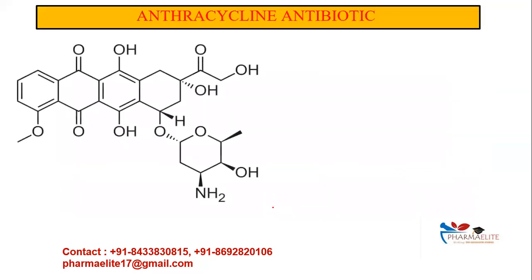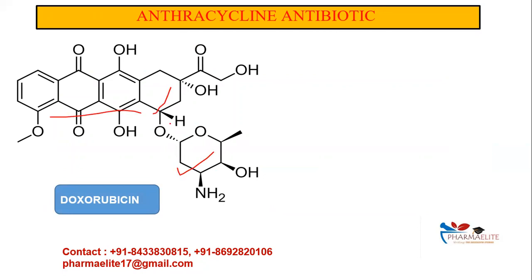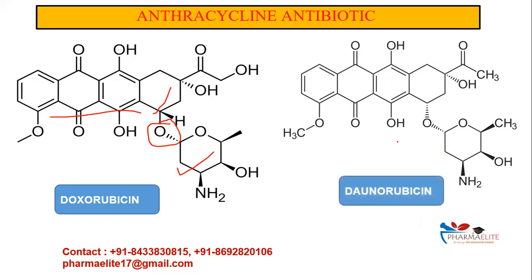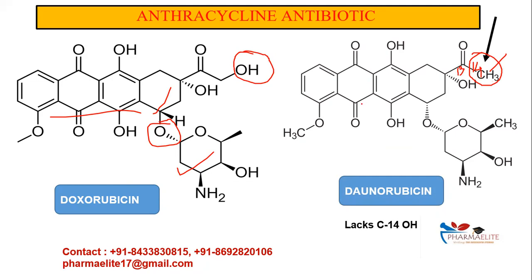This is the structure of the anthracycline antibiotic doxorubicin: the anthracycline nucleus, the cyclohexane ring fused to it, and the amino sugar attached via the glycosidic bond. The difference between doxorubicin and daunorubicin is that daunorubicin lacks the C14-OH group. In doxorubicin, there is an OH at carbon 14; in daunorubicin, that hydroxyl group is absent.